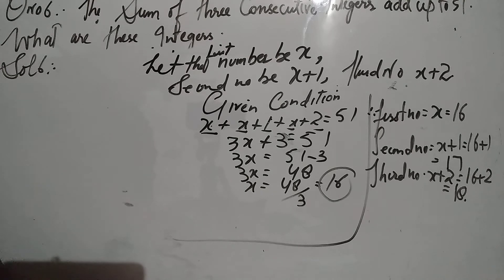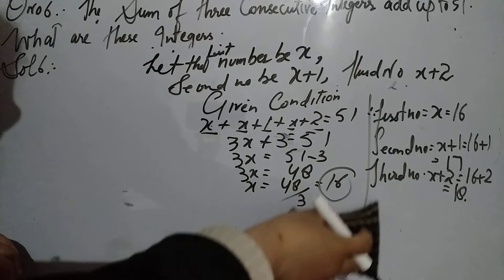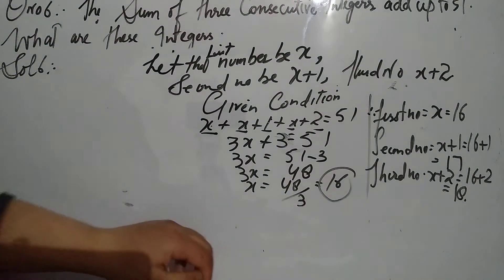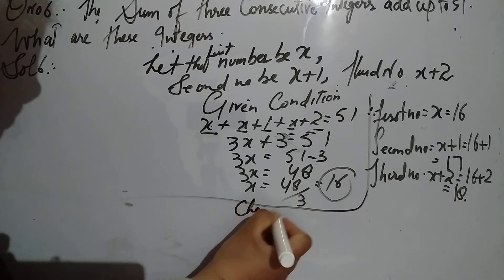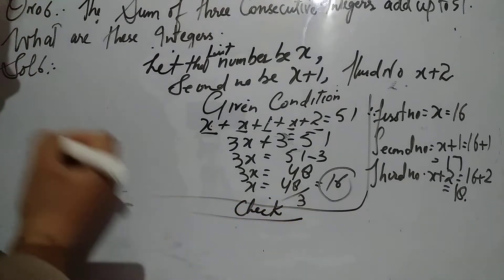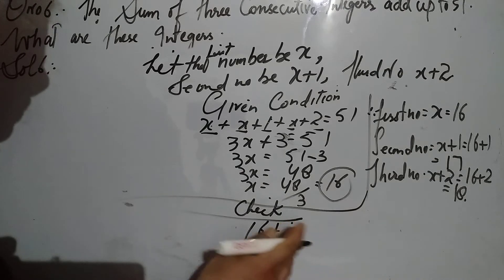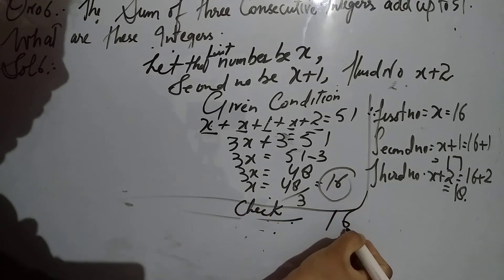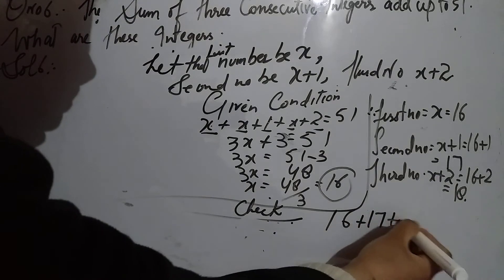Now there are three numbers and the sum of these three numbers is equal to 51. Now I will check if we add these three numbers, is the sum 51? So let us check here: 16 plus 17 plus 18.